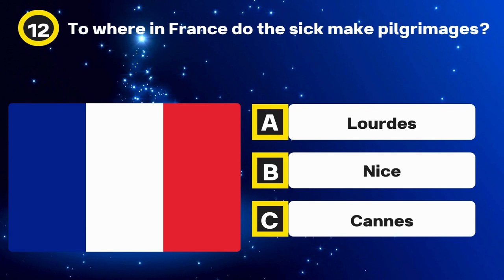Question 24. Baker, Cook — obviously occupational surnames. What did a Cordwainer do? Options: Taylor, Shoemaker, Baker. The answer: Shoemaker.